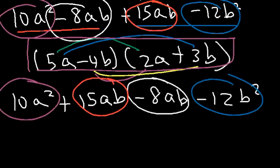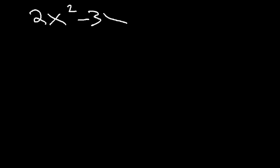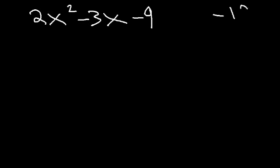Now what would you do to factor 2x squared minus 3x minus 9? When you want to factor by grouping you typically need four terms, but we only have three, so we need to adjust. First, multiply 2 by negative 9: that's negative 18. Then find two numbers that multiply to negative 18 but add to negative 3.